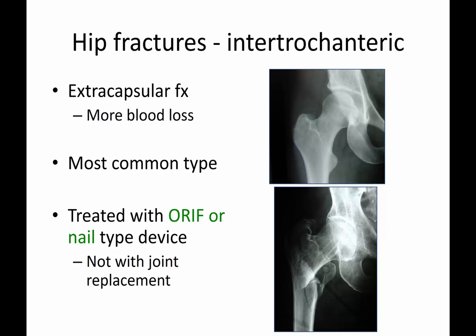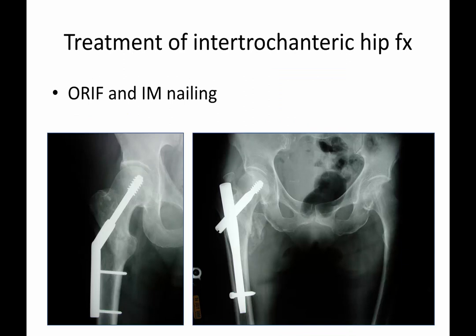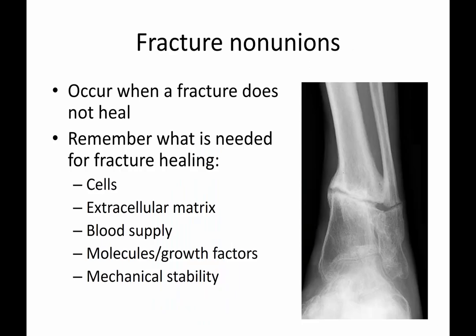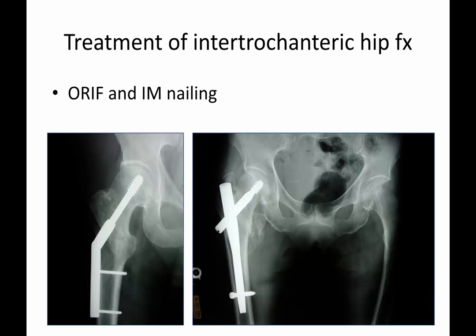Intertrochanteric fractures are extracapsular and tend to bleed more, as blood is not contained within the joint capsule. This is the most common type of hip fracture. The fracture line runs from the greater to the lesser trochanter in an oblique direction. It is treated with fixation — either a plate and screw construct or an intramedullary rod with screws — rather than replacement. We'll pause here and cover non-unions in the next video.